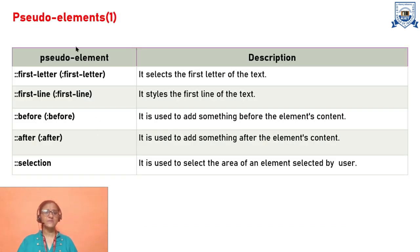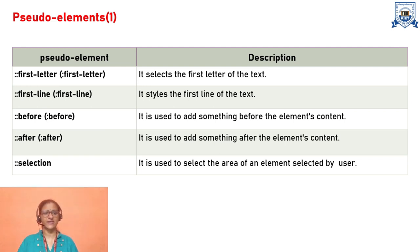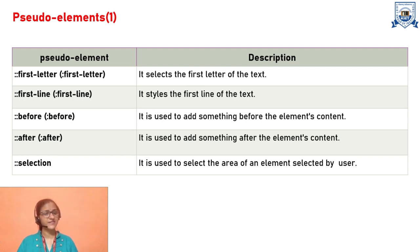Different pseudo elements include: first-letter — only affects the first letter of the text; first-line — styles the first line of the text (can also use a single colon); before — used to add something before the element's content; after — used to add something after the element's content; selection — used to select the area of an element selected by the user.